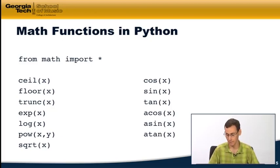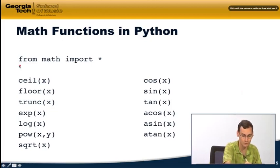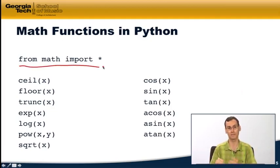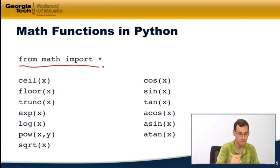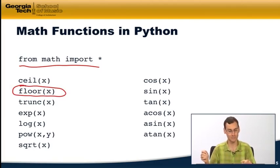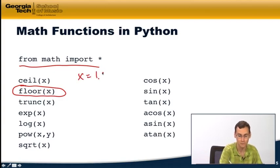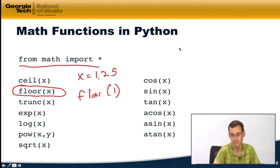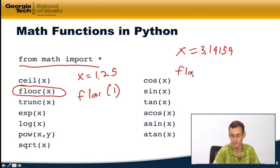I want to bring back a sense of beats, meter, and tempo using math functions. Python's math library — imported with 'from math import *' — gives us functions like sine, cosine, tangent, and others. I want to use one simple function: floor(x), which returns the highest integer that's still less than x. So floor(1.25) is 1, and floor(3.14159) is 3.